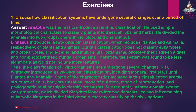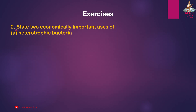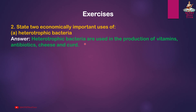Some of the characteristics included in this classification are the structure of cells, body organization, mode of nutrition, mode of reproduction, and phylogenetic relationship. Subsequently, a three-domain system was proposed, which divided kingdom Monera into two domains, leaving the remaining eukaryotic kingdoms in the third domain, thereby classifying six kingdoms.